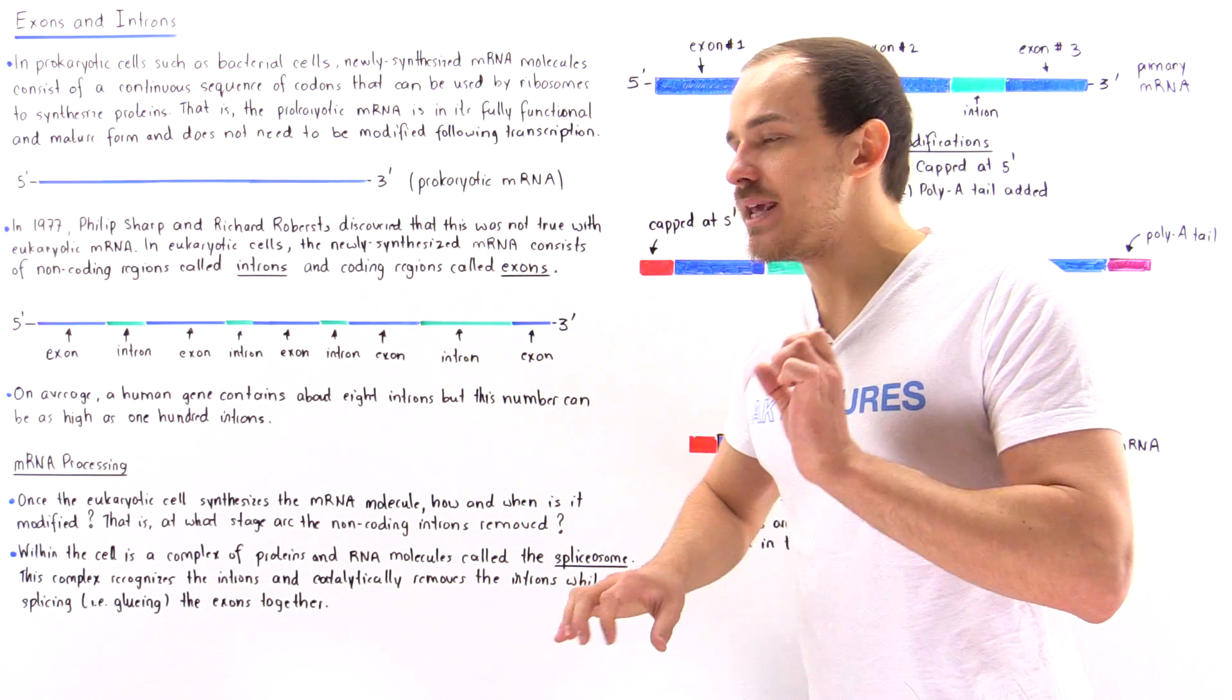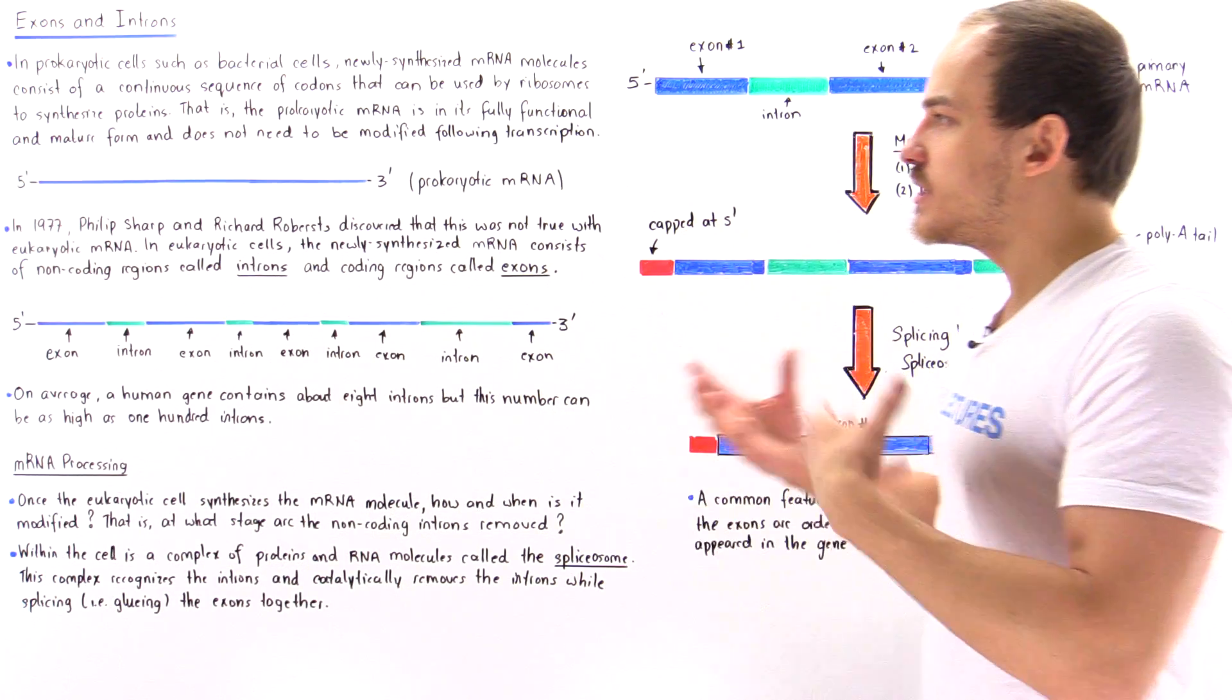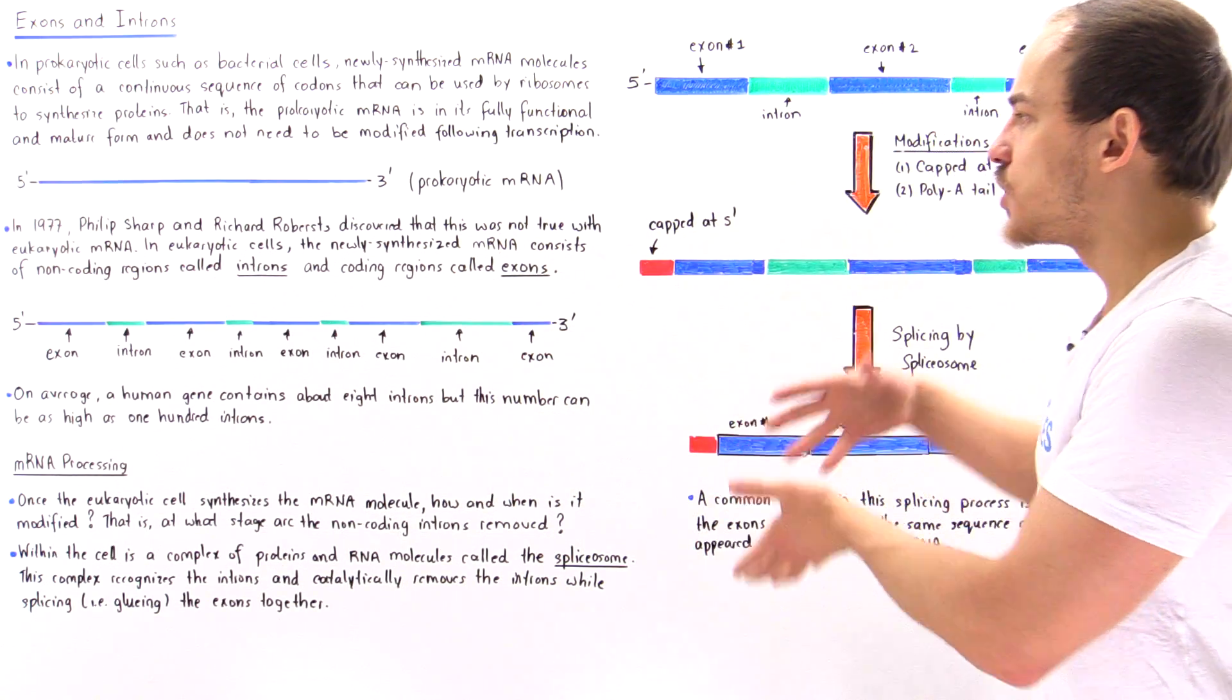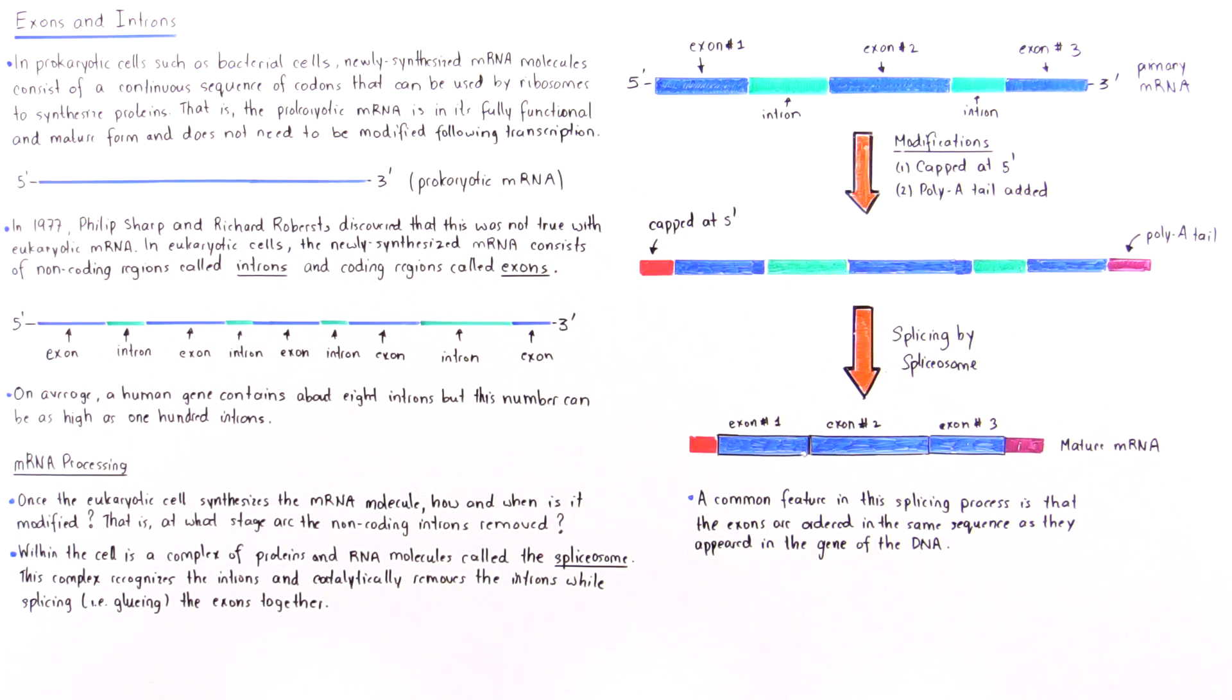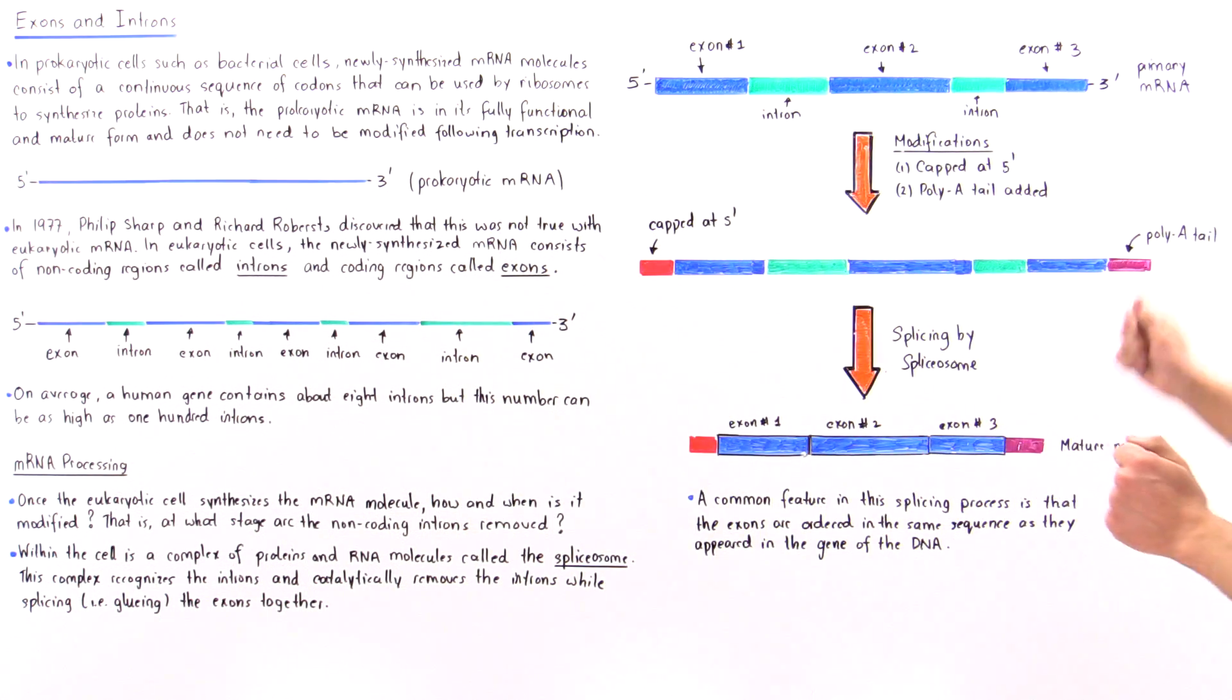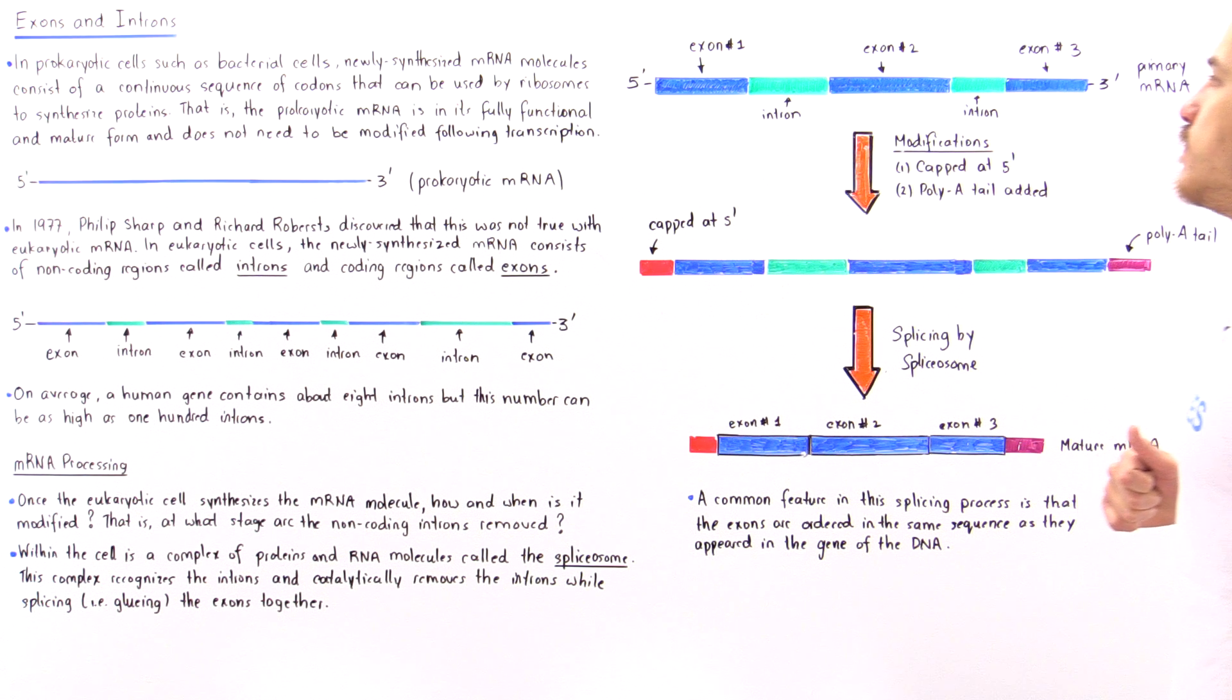And we'll discuss what that means and what that is used for in more detail in a future lecture. In this lecture, we're simply going to introduce the fact that in prokaryotic cells, we don't have this process taking place, but in eukaryotic cells, we do have the process of mRNA modification. So as soon as we synthesize that particular mRNA, that mRNA is known as the primary mRNA, the precursor mRNA, or the pre-mRNA molecule. And it consists of these introns shown in green and the exons shown in blue.